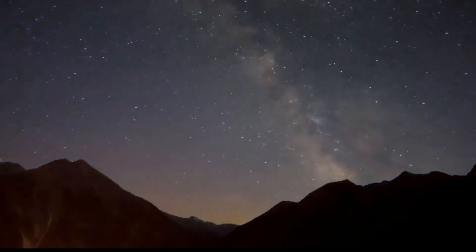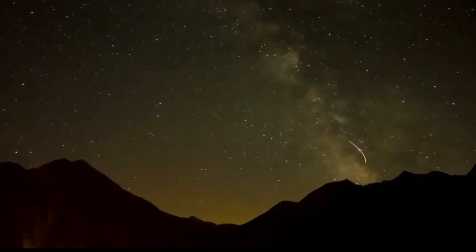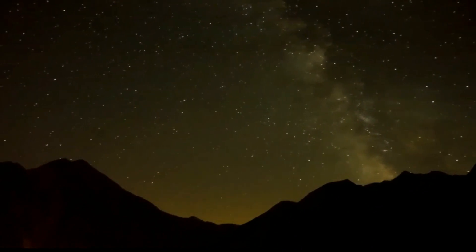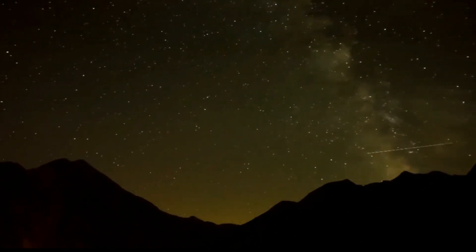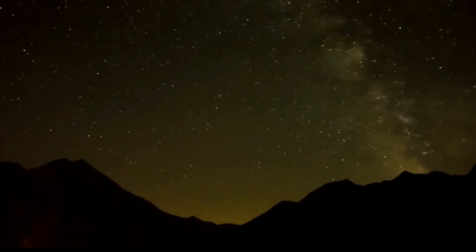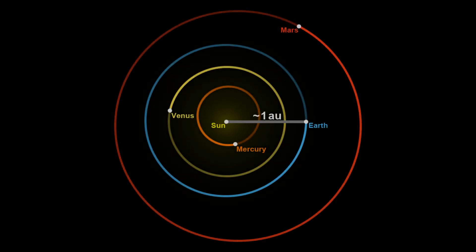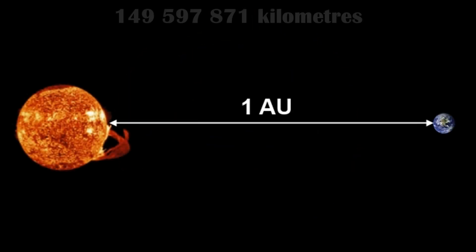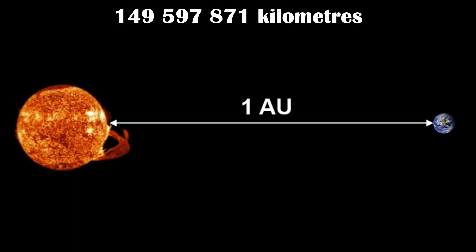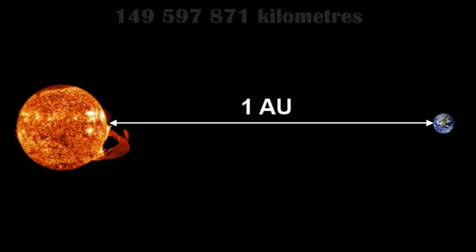For this reason, astronomers use specific terms and methods in order to determine and express those distances between astronomical objects. One of the most common metric terms used by astronomers that you might have come across is the astronomical unit, or abbreviated as AU. The astronomical unit refers to the distance between the Earth and the Sun, which is about 149,597,871 km.